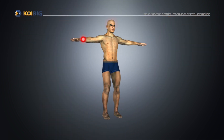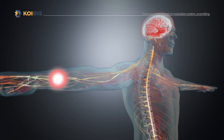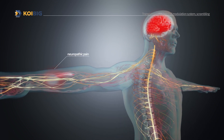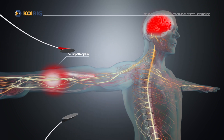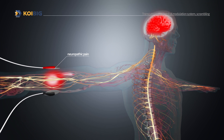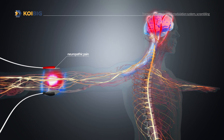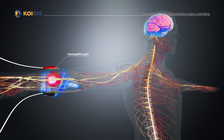In chronic pain, the brain perceives pain as normal. So PainBlock retrains the brain with scrambler therapy. This therapy generates artificial nerve information that mimics natural no-pain nerve signals of the body and transmits them through the electrodes, making the brain learn how to perceive the pain as healthy and normal.